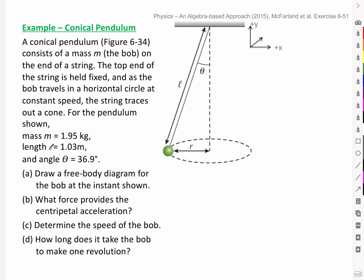For the pendulum shown, we've got a mass of 1.95 kilograms, the length of the string is 1.03 meters, and we've got an angle equal to 36.9 degrees. You're asked to draw a free body diagram for the bob at the instant shown, what force provides the centripetal acceleration, and then determine the speed of the bob and how long it takes to make one revolution.